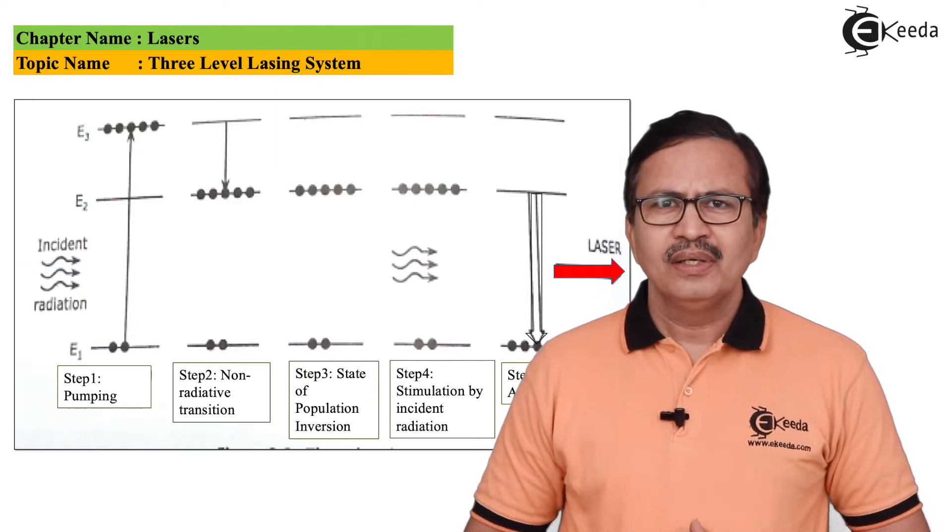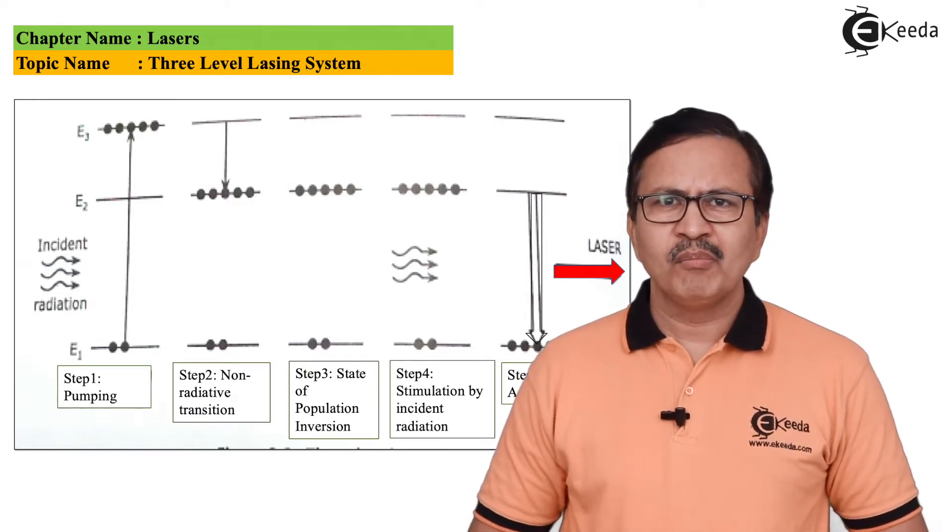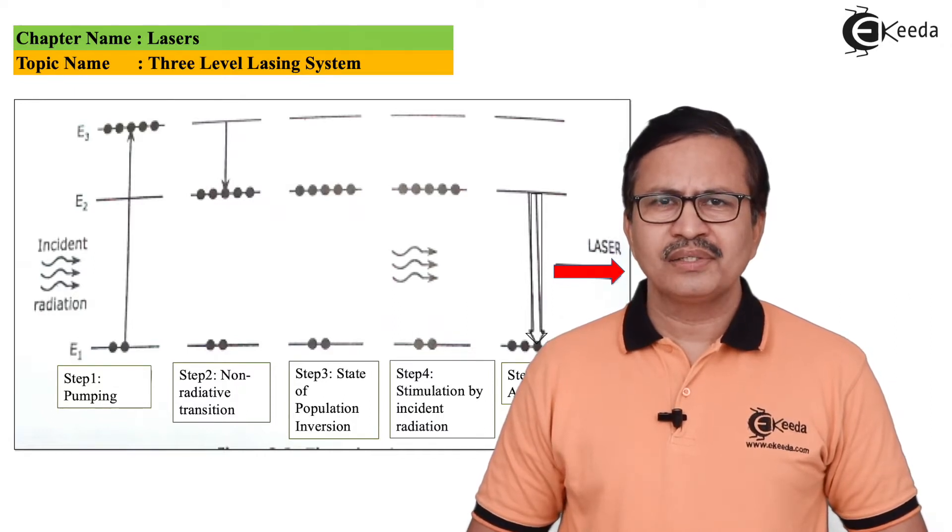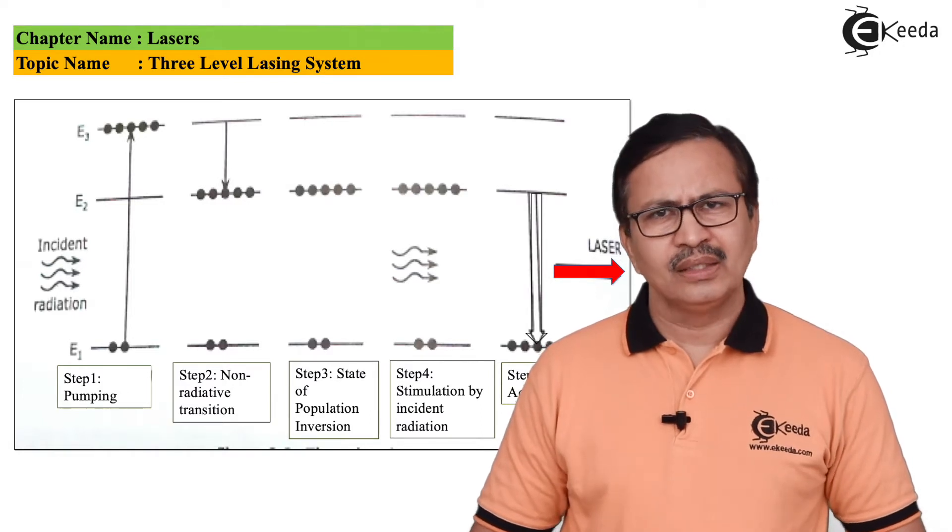Now, due to this, population inversion occurs. Population inversion means the number of atoms, that is N2, in the higher energy states become more than the number of atoms that are present in the ground state.